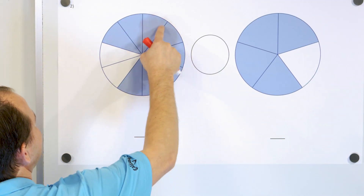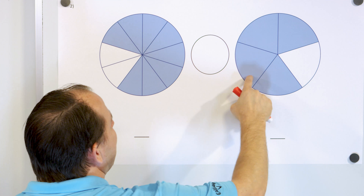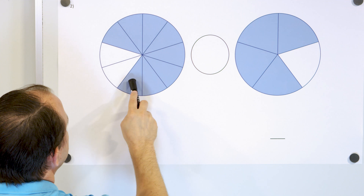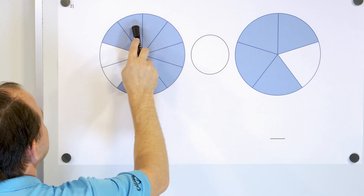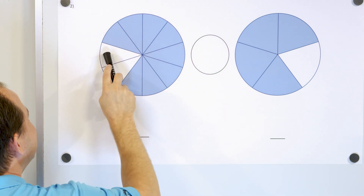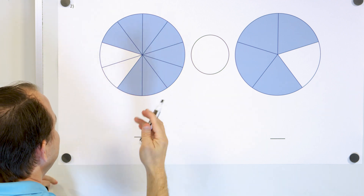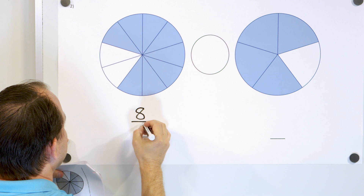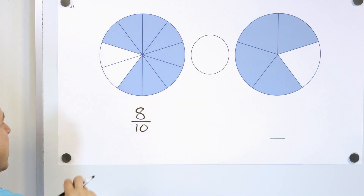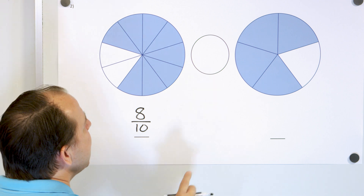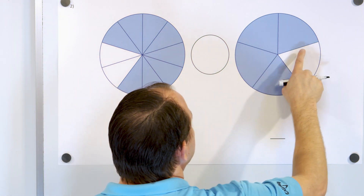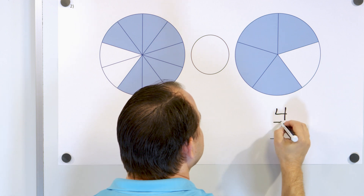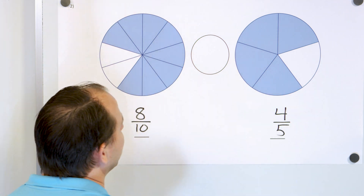We want to compare this fraction to this fraction. The very first step is to write down what the fraction is. So here we have 1, 2, 3, 4, 5, 6, 7, 8, and we have 10 pieces total. So we have 8 out of 10 pieces — the fraction is 8 tenths. And this one is 1, 2, 3, 4 out of 5 pieces total, but I only have 4 of them. So this is 4 fifths.